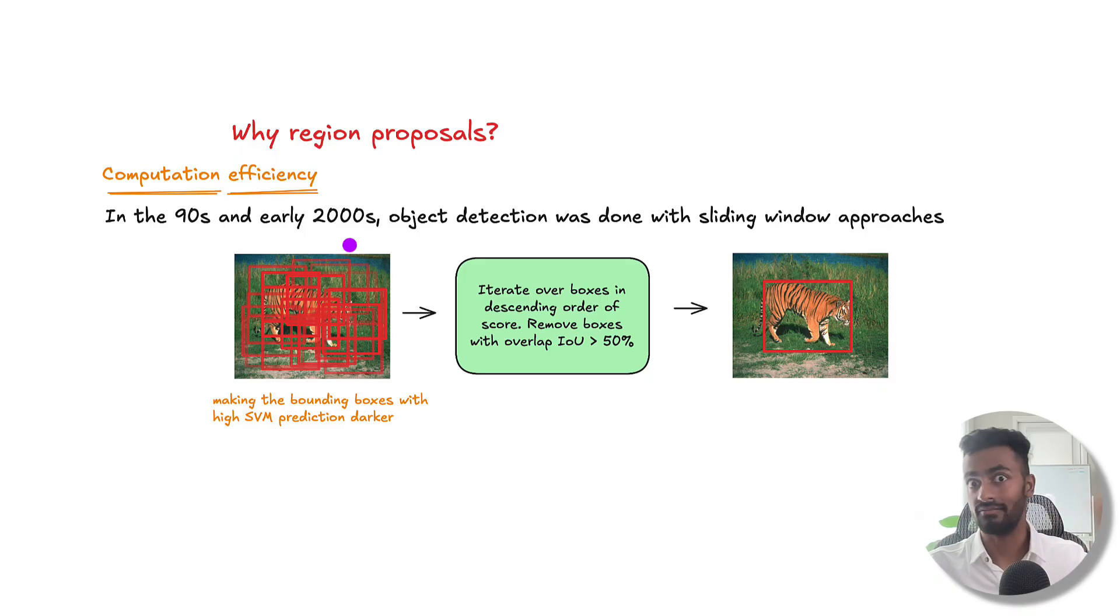And then after that, we have like hundreds of thousands of these bounding boxes. What we do is that we iterate over the bounding boxes in the descending order of their SVM prediction, and then remove the bounding boxes which have a very high overlap. And so you'll end up with probably one bounding box, ideally per object. And that's how object detection is traditionally done.